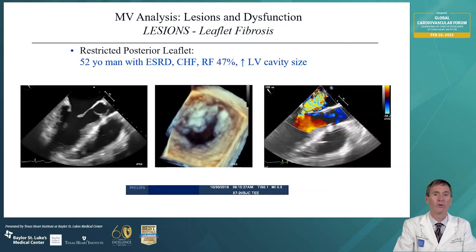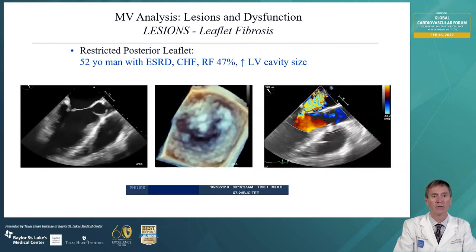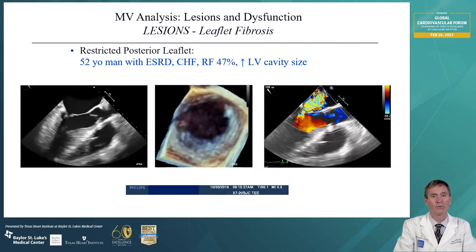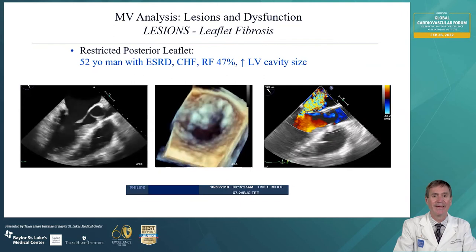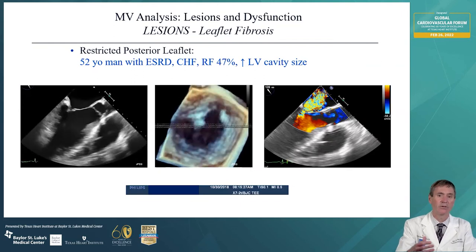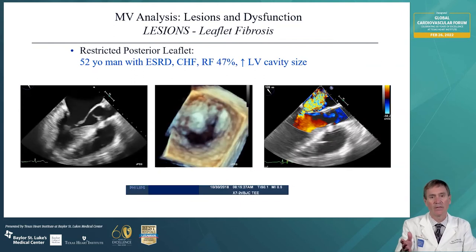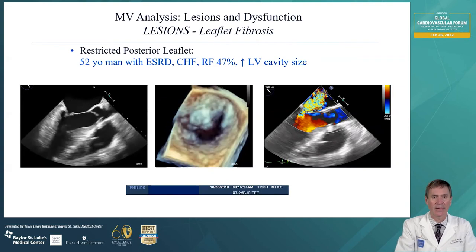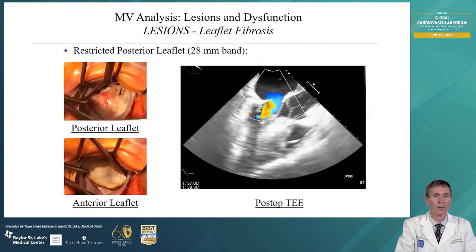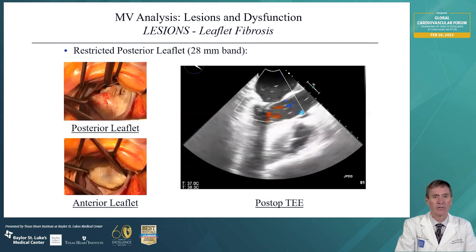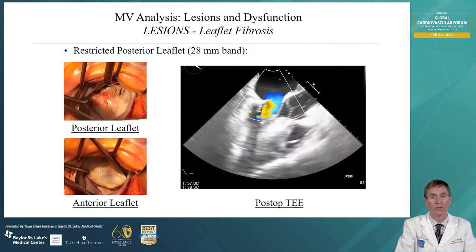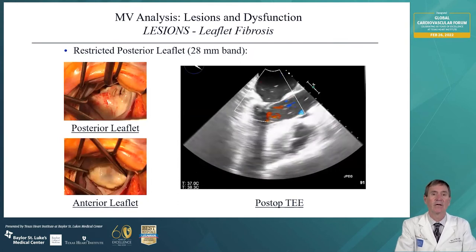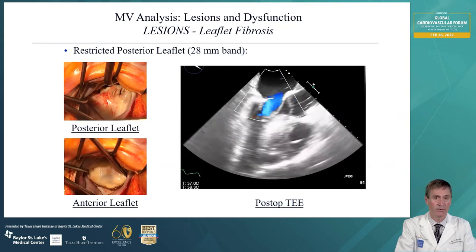Here we have leaflet fibrosis — a restricted posterior leaflet. You can see in the image on the left that the posterior leaflet doesn't hardly move, and you can see that the anterior leaflet in the middle 3D image does not come all the way back down to the bottom annulus to close the regurgitating cavity. In this patient the restricted posterior leaflet was thickened but the anterior leaflet was normal caliber. So what we did was put in a downsizing annuloplasty band and were able to eliminate the regurgitation.